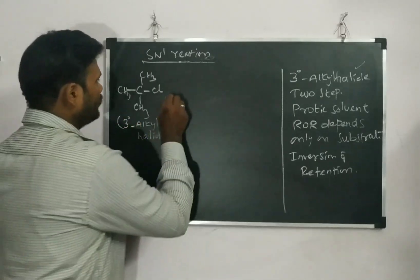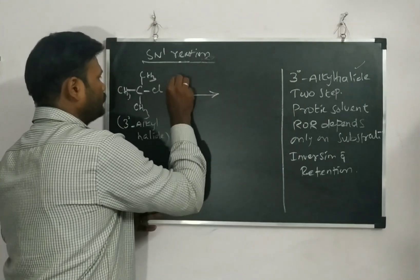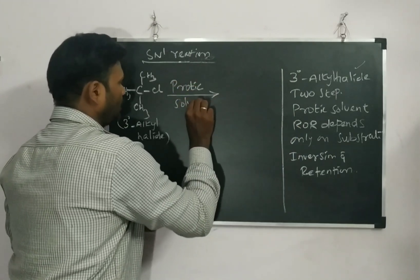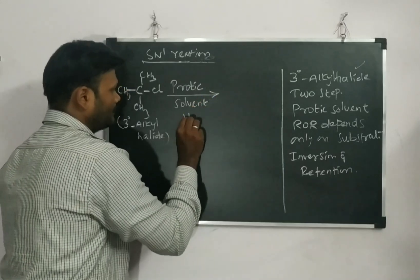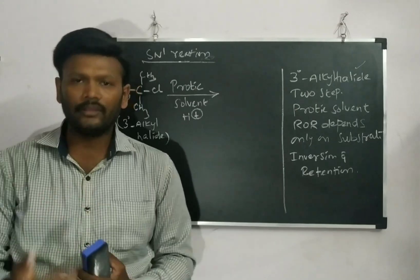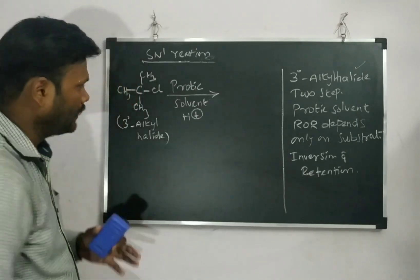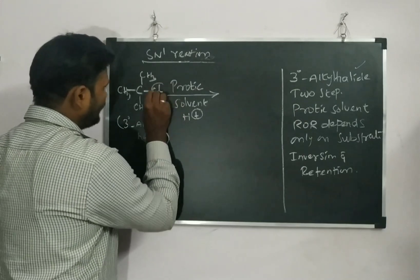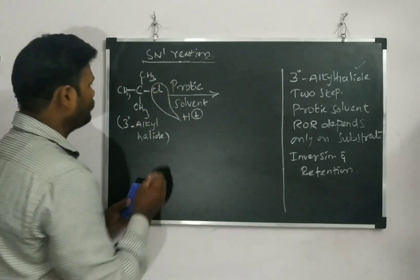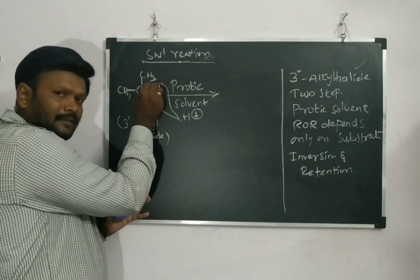Now we have to consider two things. There is a protic solvent. What is the role of the protic solvent here? A protic solvent is one which releases H+ ions. The solvent that gives H+ ions is called a protic solvent. The protic solvent will attract and cleave the Cl-, so this C–Cl bond is getting broken and Cl- leaves.